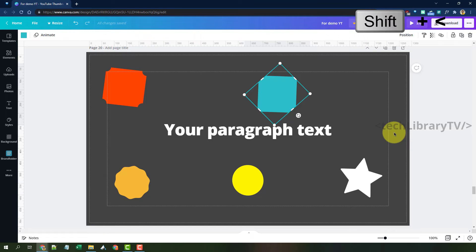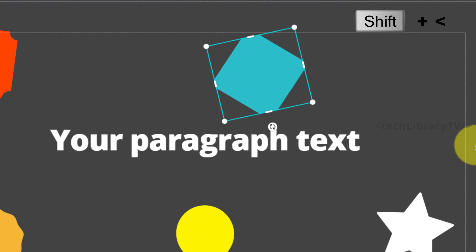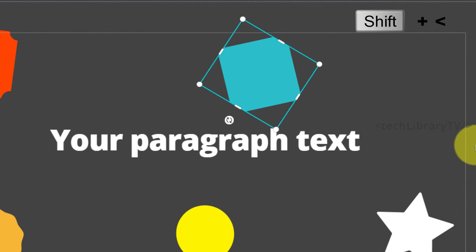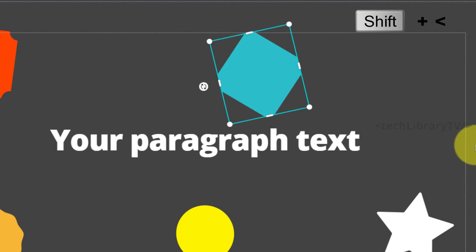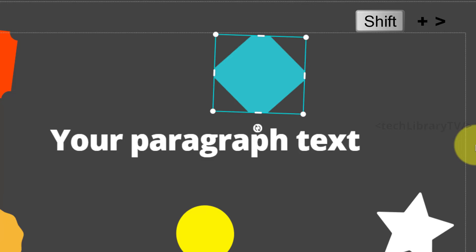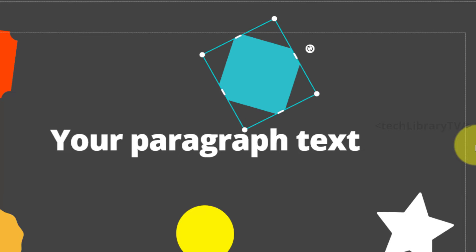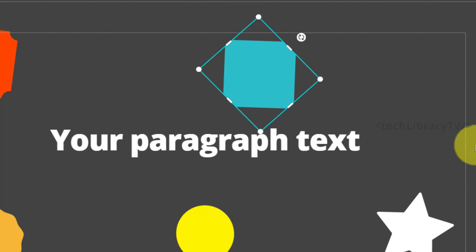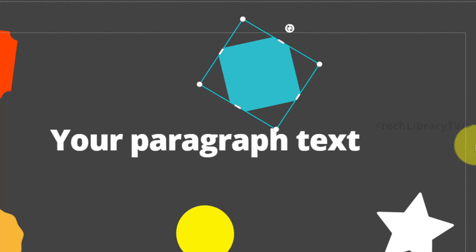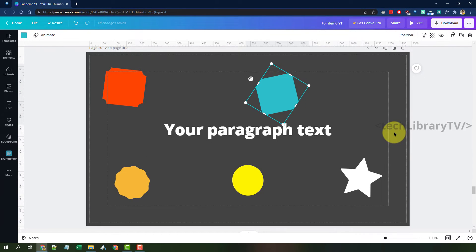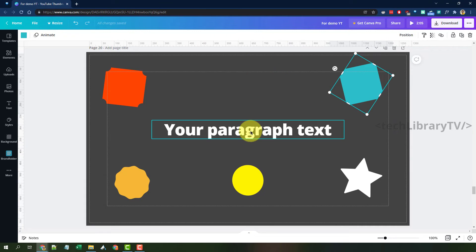You can also use Shift plus the angle brackets alone to rotate both ways — the left angle bracket and Shift, or the right angle bracket and Shift. Note you cannot keep pressing continuously; you have to do it one press at a time. Those are all the rotation options for general elements.